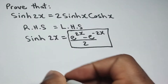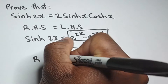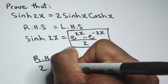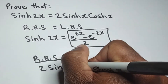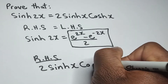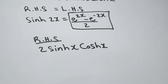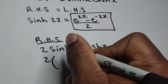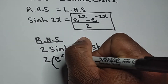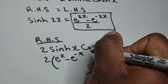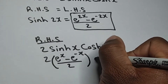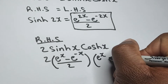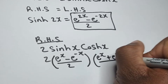This is what we're working towards. We're starting off with the right hand side which is 2 times hyperbolic sine of x times hyperbolic cosine of x. We'll have 2 times the definition for hyperbolic sine of x, which is e to the x minus e to the minus x over 2, times the definition for hyperbolic cosine of x, which is e to the x plus e to the minus x over 2.